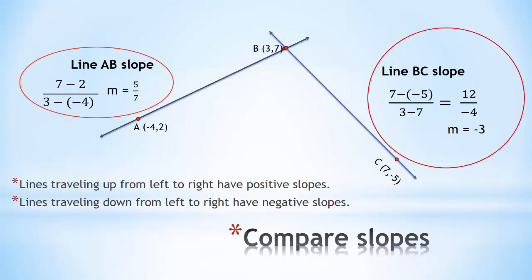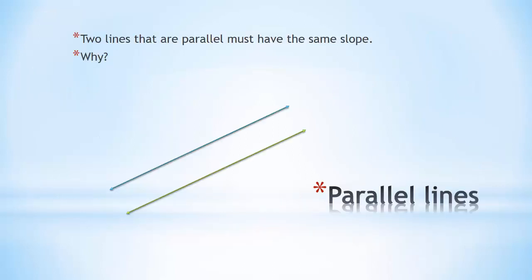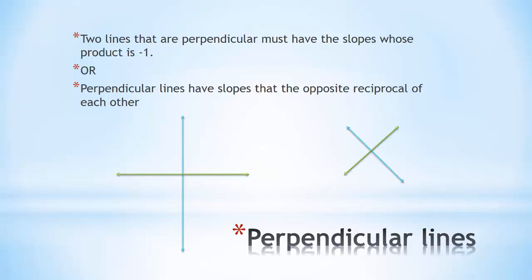Now, two lines that are parallel have the same slope. Why is that? Well, if we think about steepness, then if I was to adjust either of these two lines so that one was steeper than the other, they would eventually intersect. Parallel lines by definition are lines that never intersect.